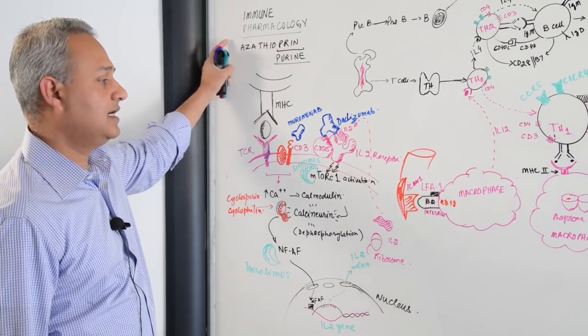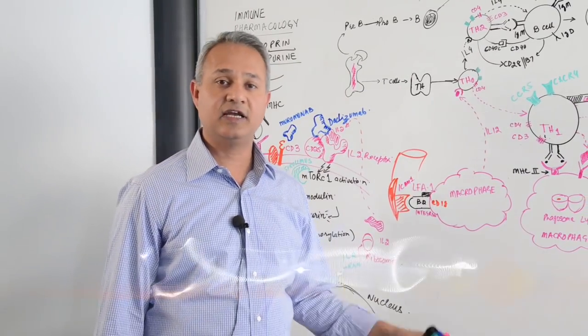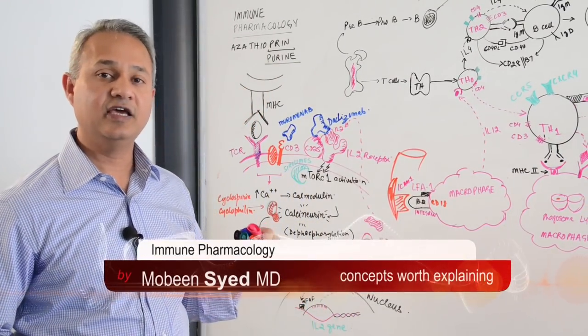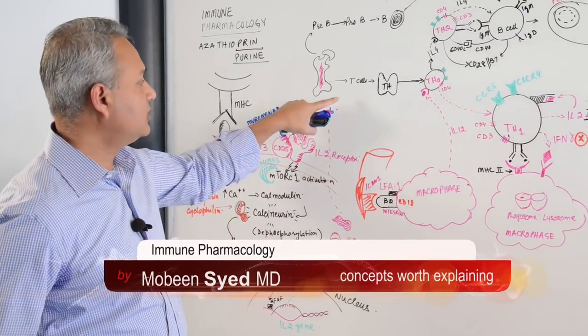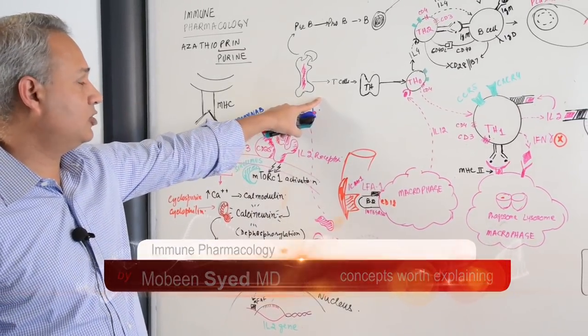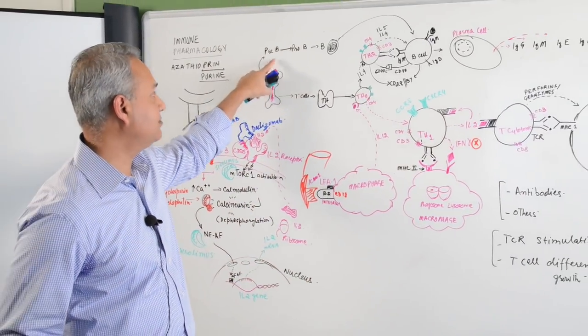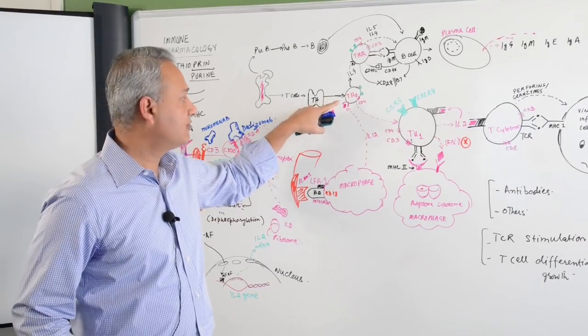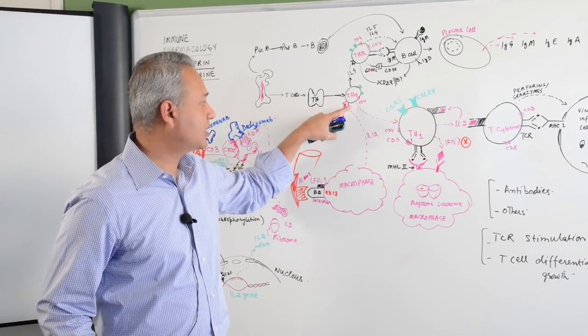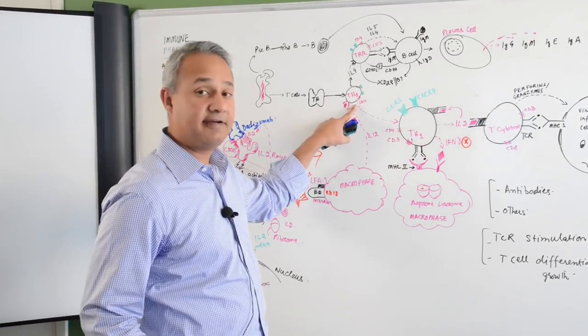In immune pharmacology, let us very quickly look at the immune function and let me point to you where the drugs act on the immune system. We talked about this in our last lecture as well for immunopathology. Bone marrow makes T cells and B cells. T cells go to thymus where they get educated and selected and they become naive T cells.